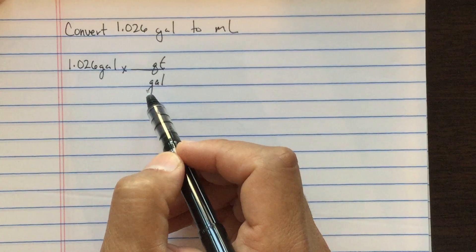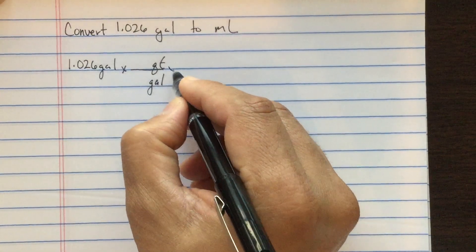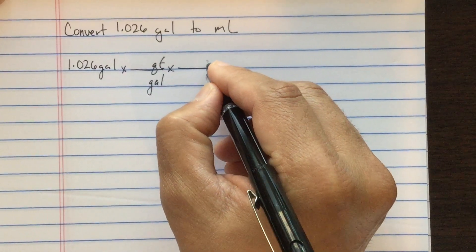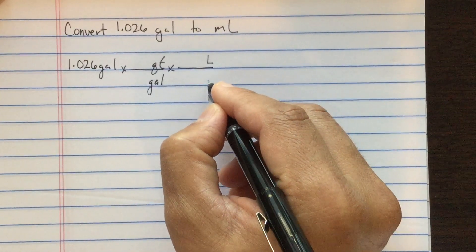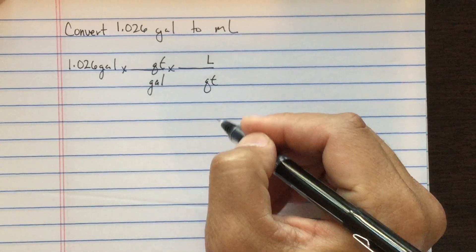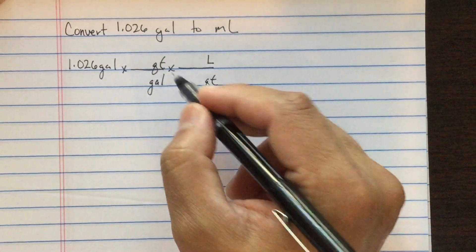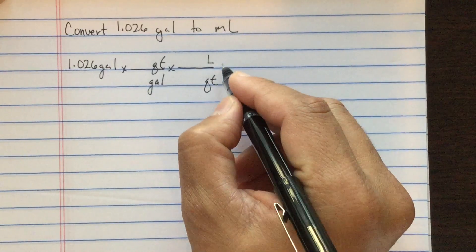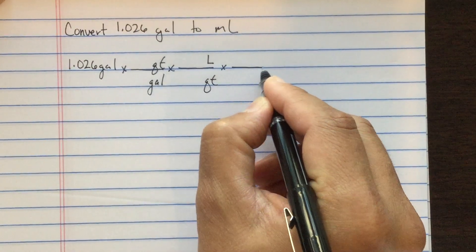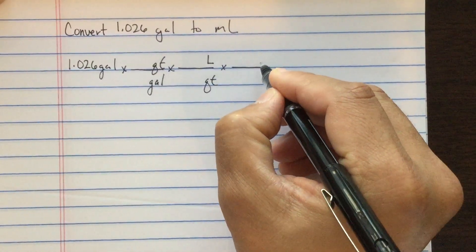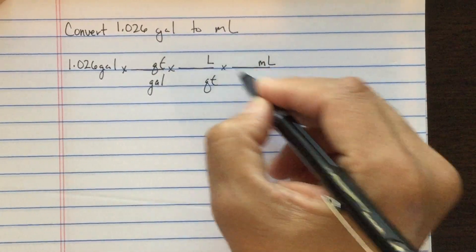From quarts we can convert to liters and cancel quarts. Now the quarts over quarts will cancel. Finally we have liters that can convert to milliliters and cancel liters.